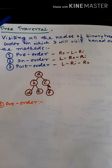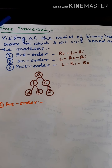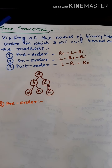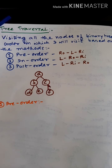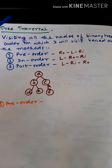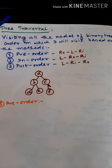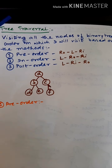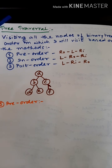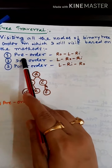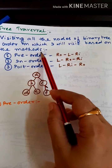Good morning students. In the earlier classes we learned about the various concepts of trees, basic terminologies associated with trees, and the various types of trees. Now in today's class we will be studying about tree traversals. Traversing means visiting all the nodes of the binary tree or any tree. The order in which we visit is based on the methods.